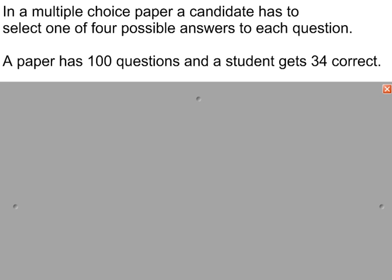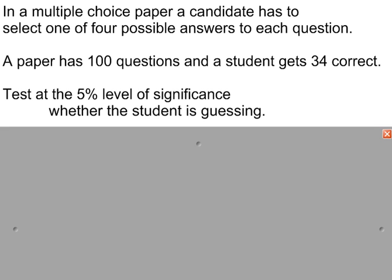A paper has 100 such questions and a student gets 34 correct. We're going to test at the 5% level of significance whether the student is guessing.